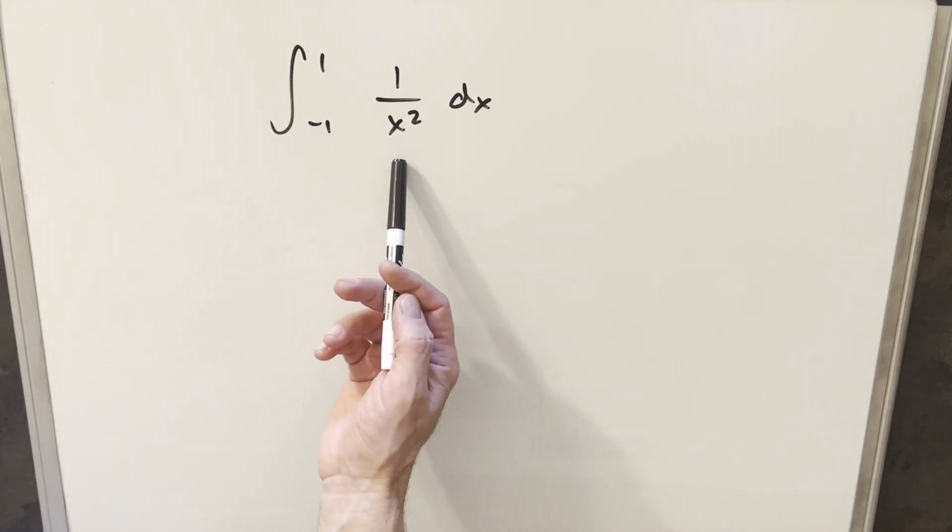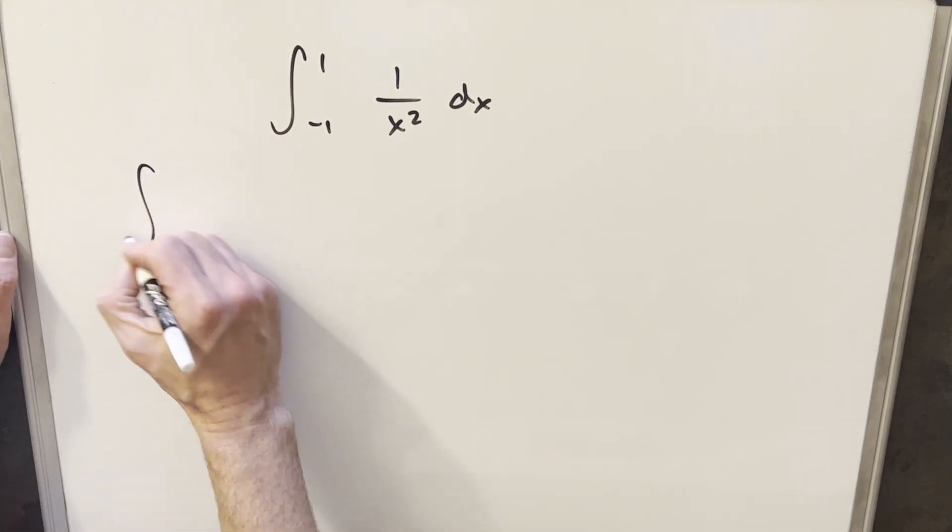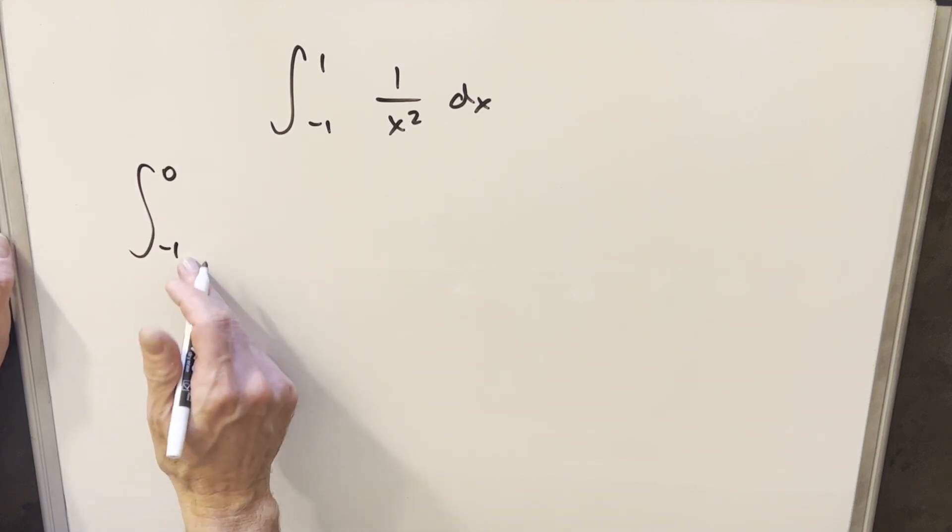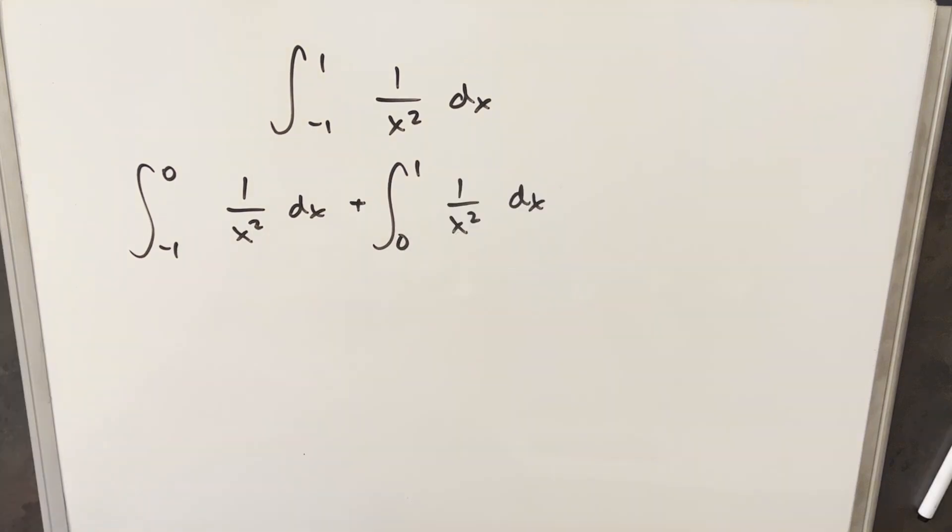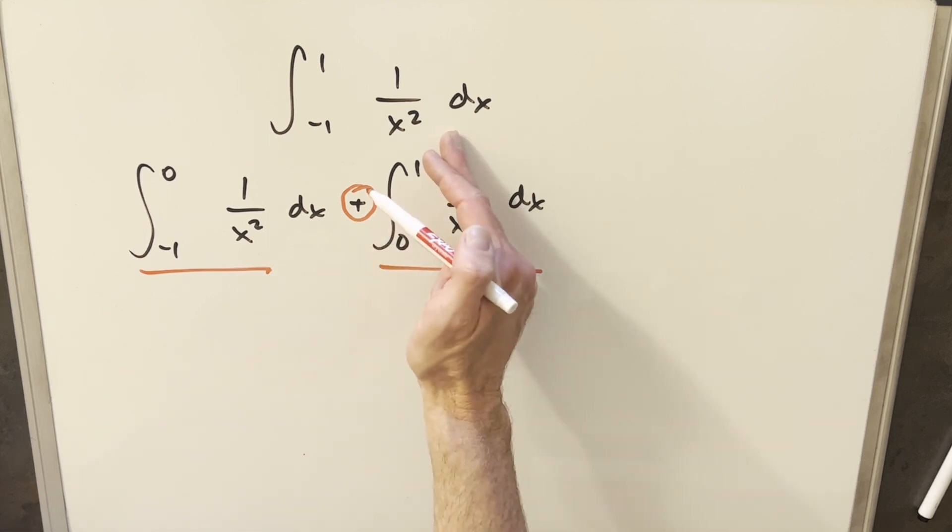So what I want to do instead, understand that we've got a problem point at 0, is I can actually break this up and I can write this integral as going from minus 1 to 0. And then we can go from 0 to 1. Now we still need to be a little careful with this idea of adding these two things together. Because in order to add these, we need both these integrals separately to converge. If either one of these diverges, our whole integral diverges.